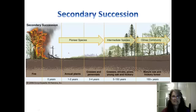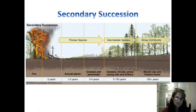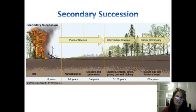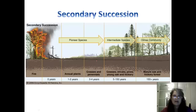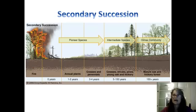So here's how secondary succession might work. You have a community, you have a fire, and that community is essentially apparently wiped out. However, pioneer species will come in and begin to colonize this area. They will begin making the habitat suitable for other organisms to come in. Perhaps their seeds are blown there, and they colonize the area. And then over time we see even bigger plants and animals coming in until finally we have a climax community.